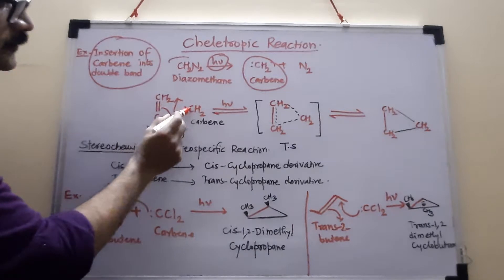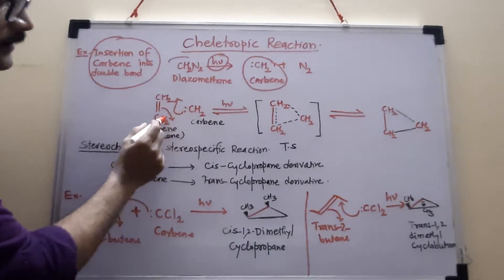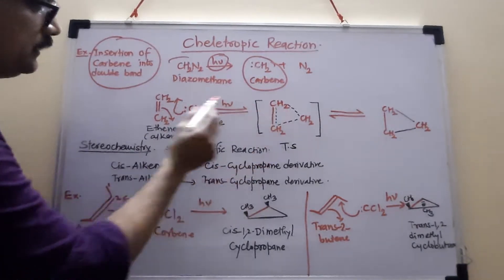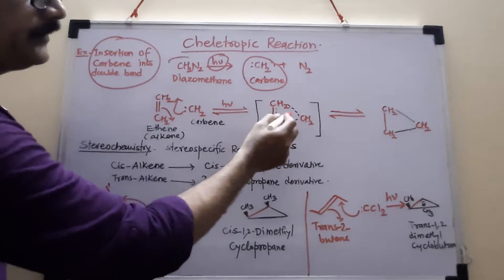This pair is moving in between these two carbons and this pi bond is moving in between these two carbons. So two sigma bonds. Through this, actually, this is cyclic transition state.